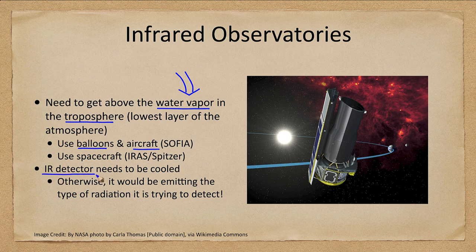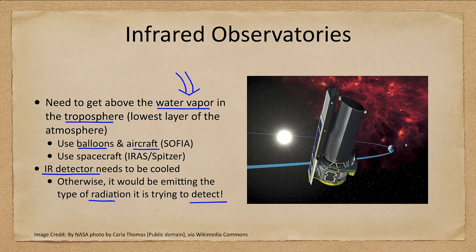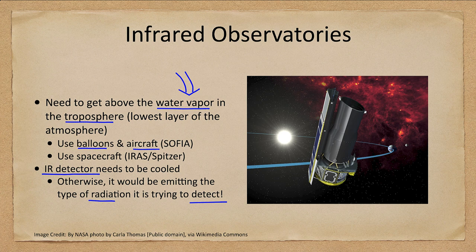One key requirement for an infrared detector is that it needs to be kept very cold, because otherwise it would be emitting the very light it is trying to detect. Everything gives off radiation based on its temperature, so a heated detector would tend to emit infrared light. If your detector is glowing in infrared, the signal from stars would be insignificant by comparison — so infrared detectors must be cooled to work properly.